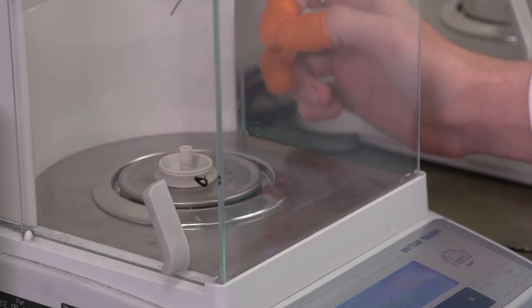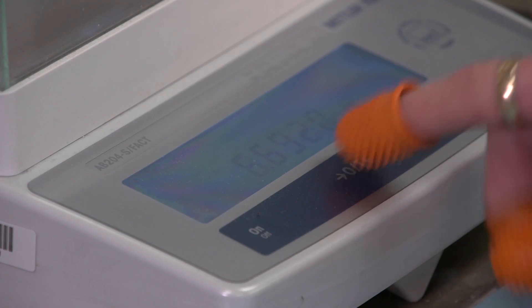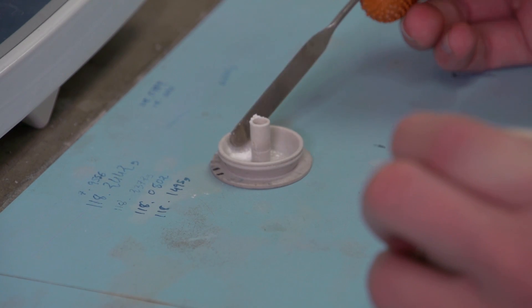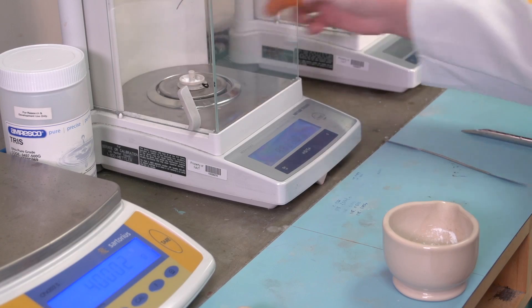Tare a Teflon sample holder on the analytical balance. Weigh half a gram of sample into the dish and record the value in the log book.